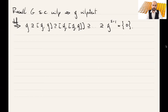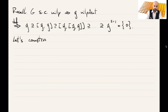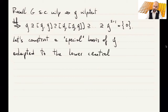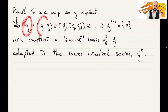This is the definition of a nilpotent Lie algebra. Now let's consider this flag of subspaces G and construct a special basis for G adapted to this flag. The elements of the lower central series are called Gₖ — so G₁, G₂, G₃, and so on.